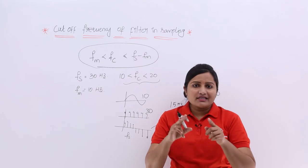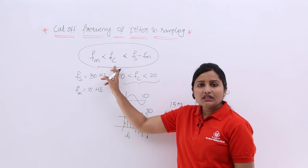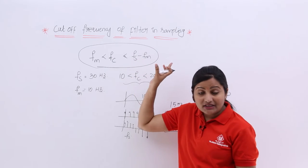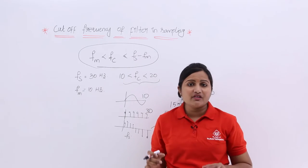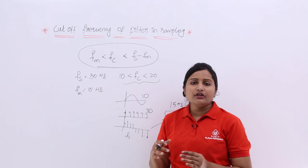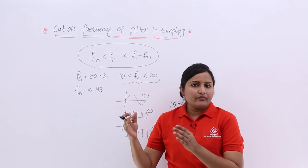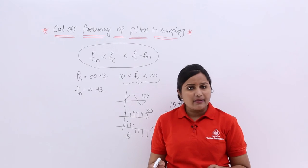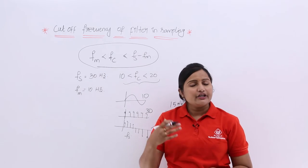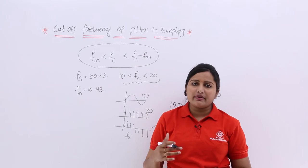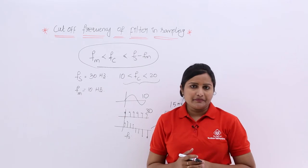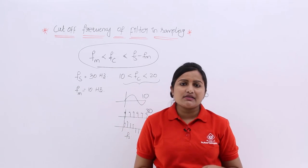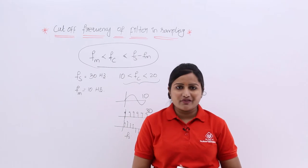To resolve that problem, we maintain the filter cutoff frequency in the range: FM < FC < FS − FM. In this range only should you consider the cutoff frequency of your LPF or any filter. Then you will get a perfect filtered version of your sampled signal, from which you can reconstruct your message signal perfectly. This is about the cutoff frequency of the filter in sampling; in the next classes we will discuss some problems related to this.